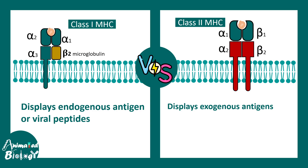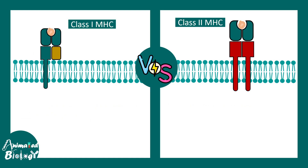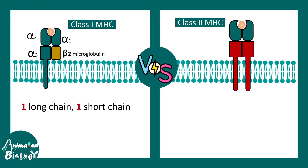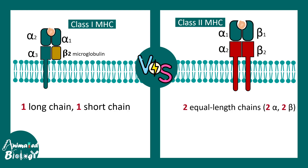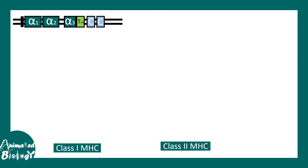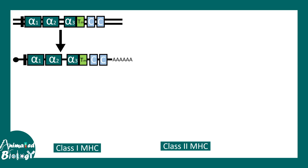For example, antigens from a bacteria. Class 1 MHC has one long chain and one short chain, and beta-2 microglobulin is also associated with it. In the case of Class 2 MHC, there are two equal-length chains, alpha and beta.